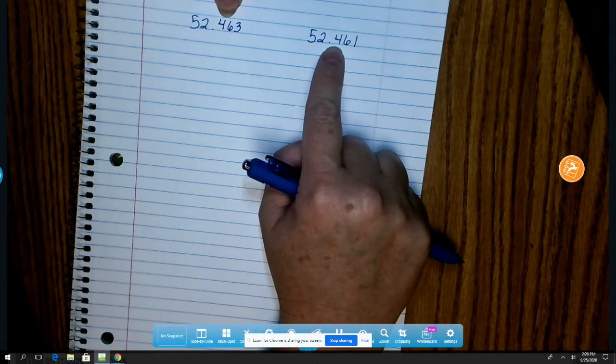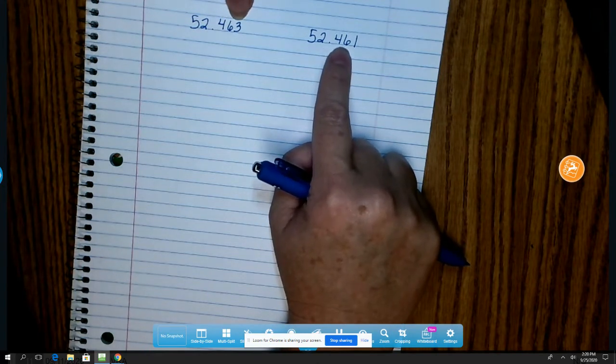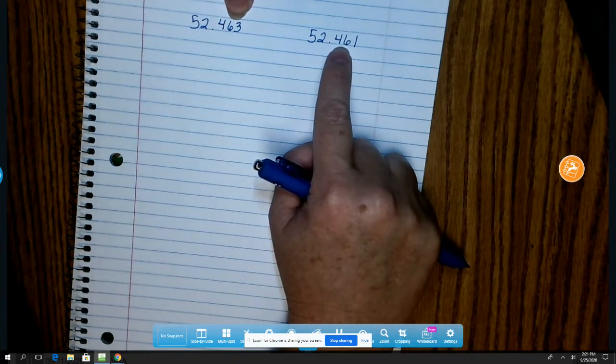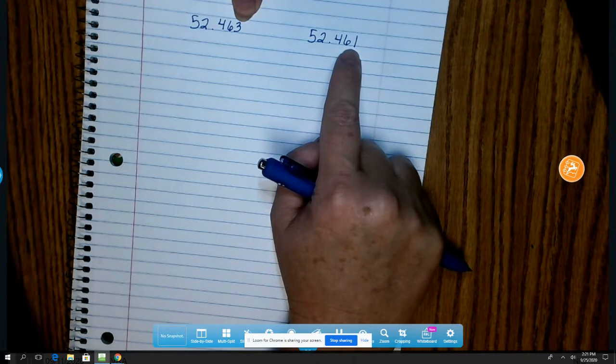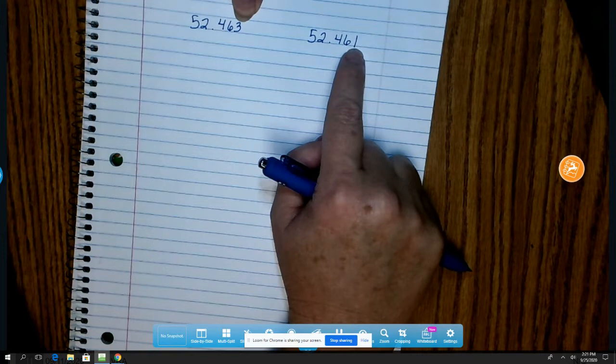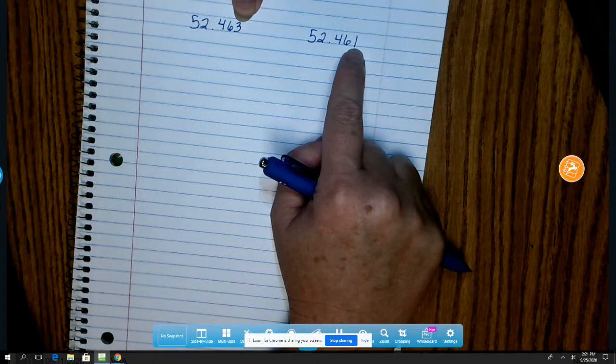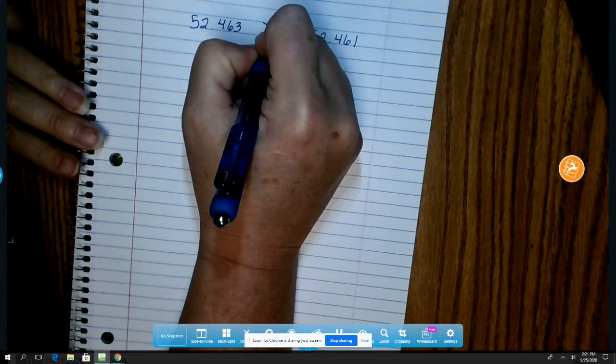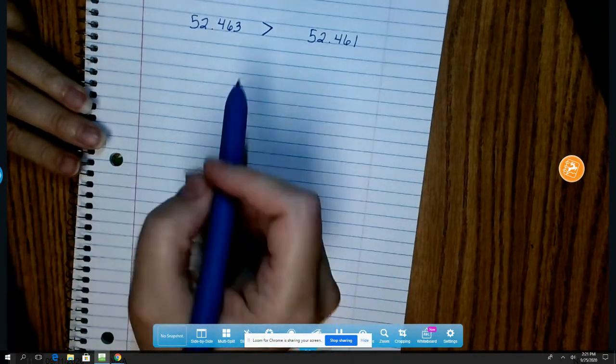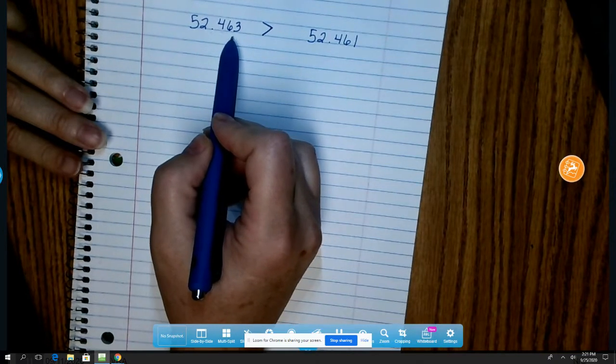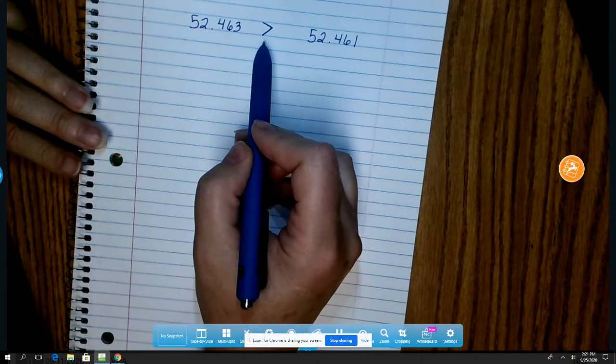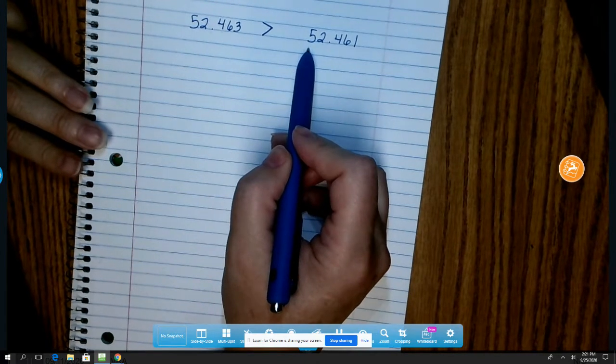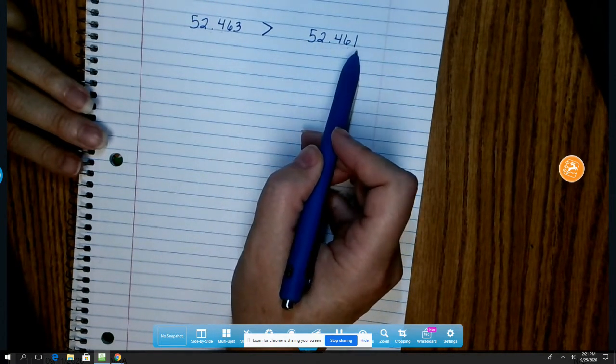Four and four are the same. Six and six are equal. Three and one. Oh, those are different. And I know that three is larger than one is. So since everything else is the same and three is larger than one, that means my duck or alligator is going to eat this number. 52 and 463 thousandths is greater than 52 and 461 thousandths.